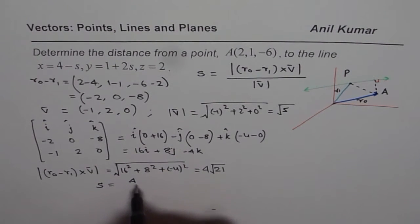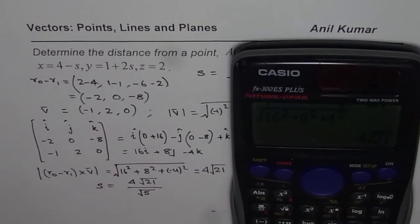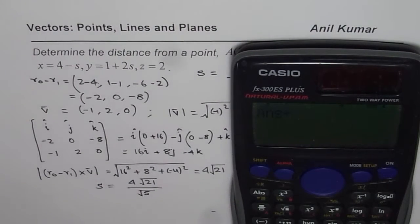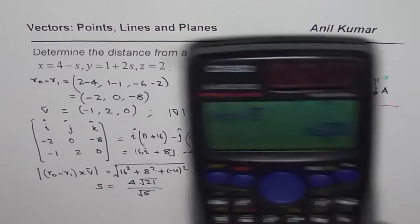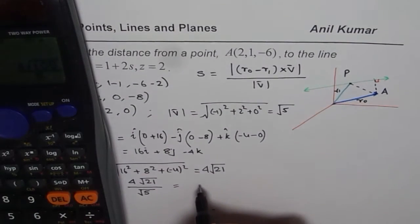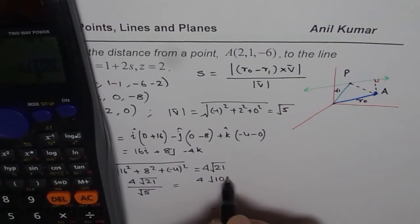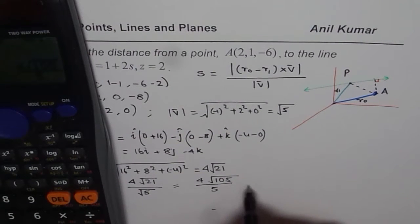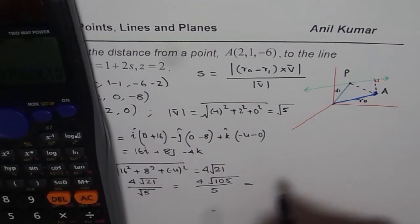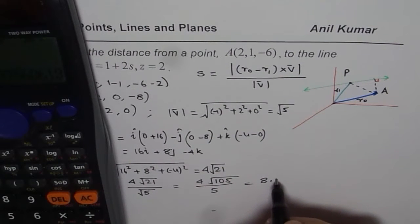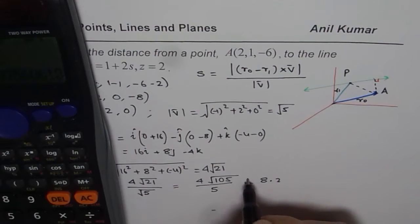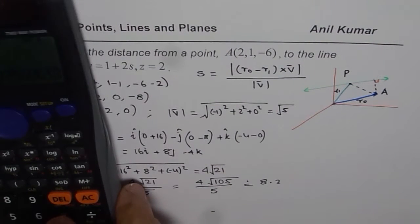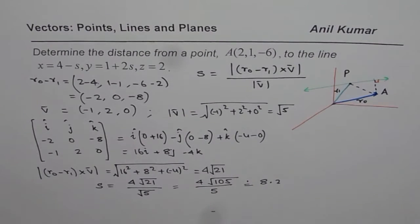So 4 square root 21 is already there divided by square root of 5. So these are simple ways of doing it. So we have the answer here. So we have the answer here, which is 4√105 over 5. In decimals, if you want to, you say approximately 8.20. So let us just do two decimal places, approximately 8.20.